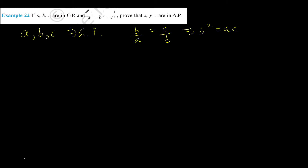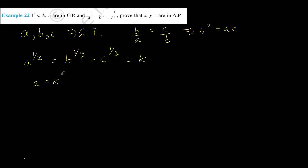The second part says that A to the power 1 by X equals B to the power 1 by Y equals C to the power 1 by Z, and we need to prove that X, Y, Z are in AP. Let's say this common value equals K. So A equals K to the power X, B equals K to the power Y, and C equals K to the power Z.